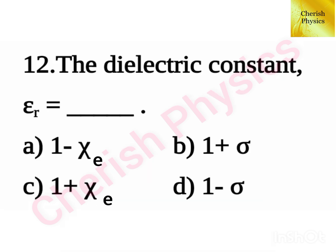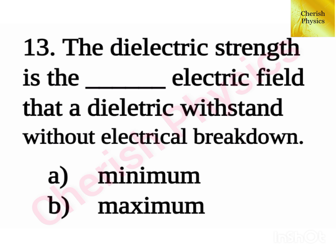The dielectric constant epsilon r is equal to — The dielectric strength is the dash electric field that a dielectric can withstand without electrical breakdown.